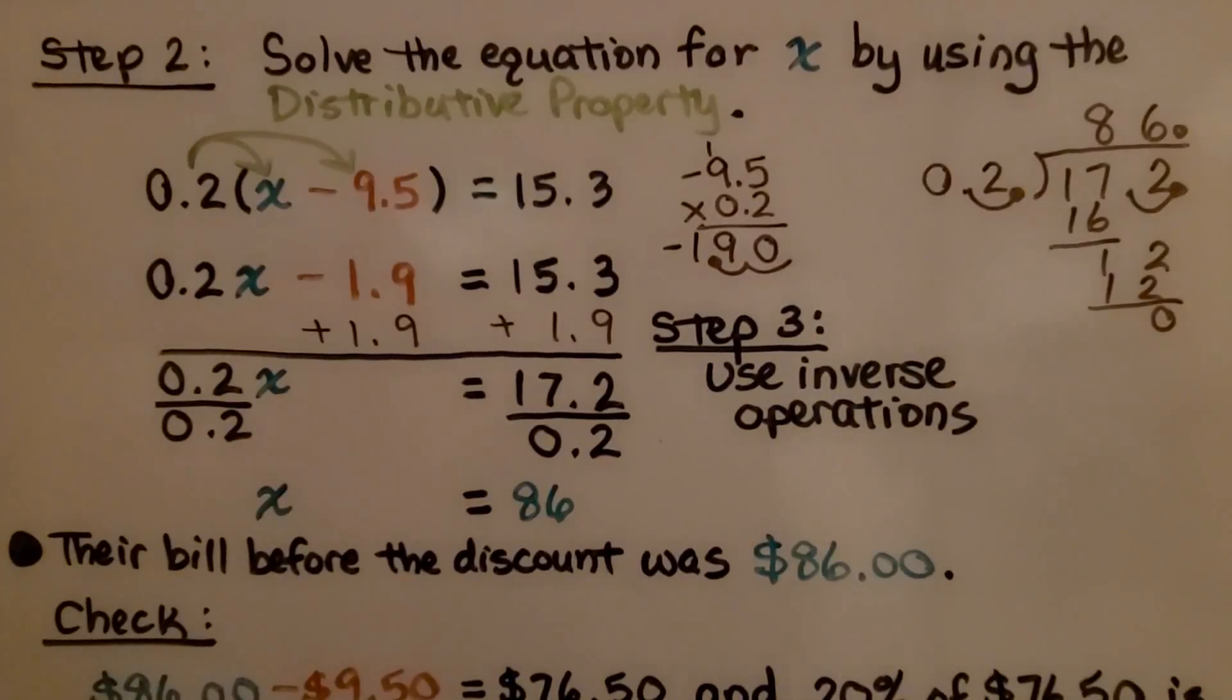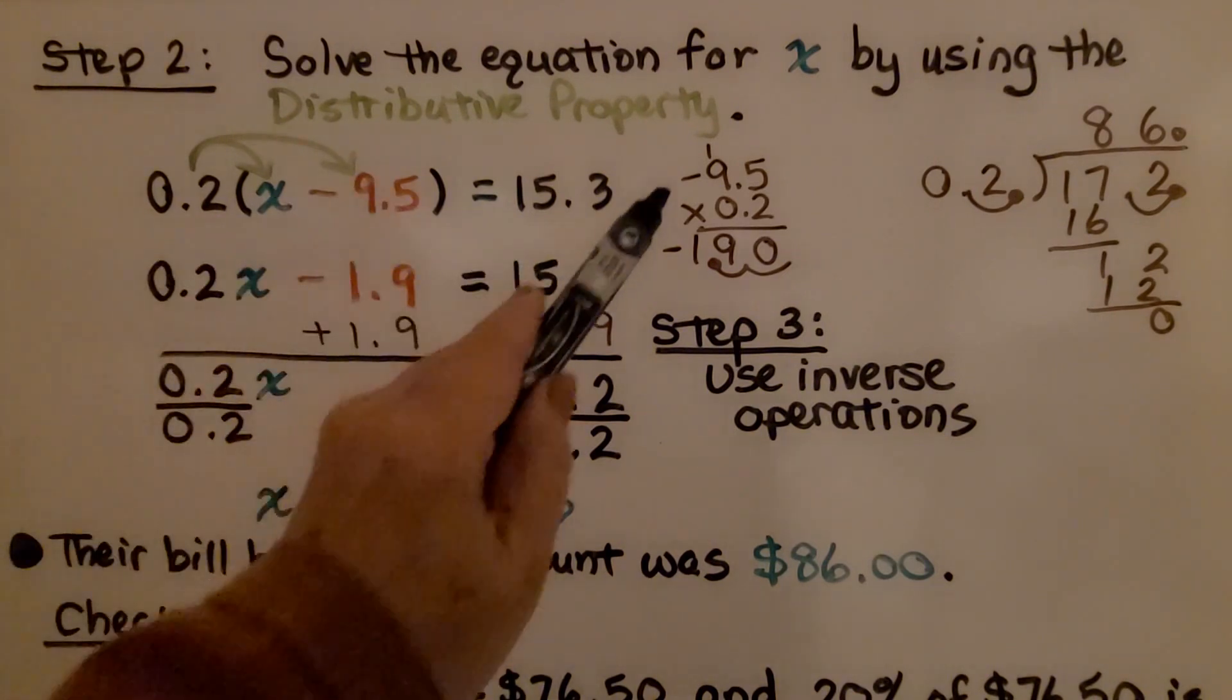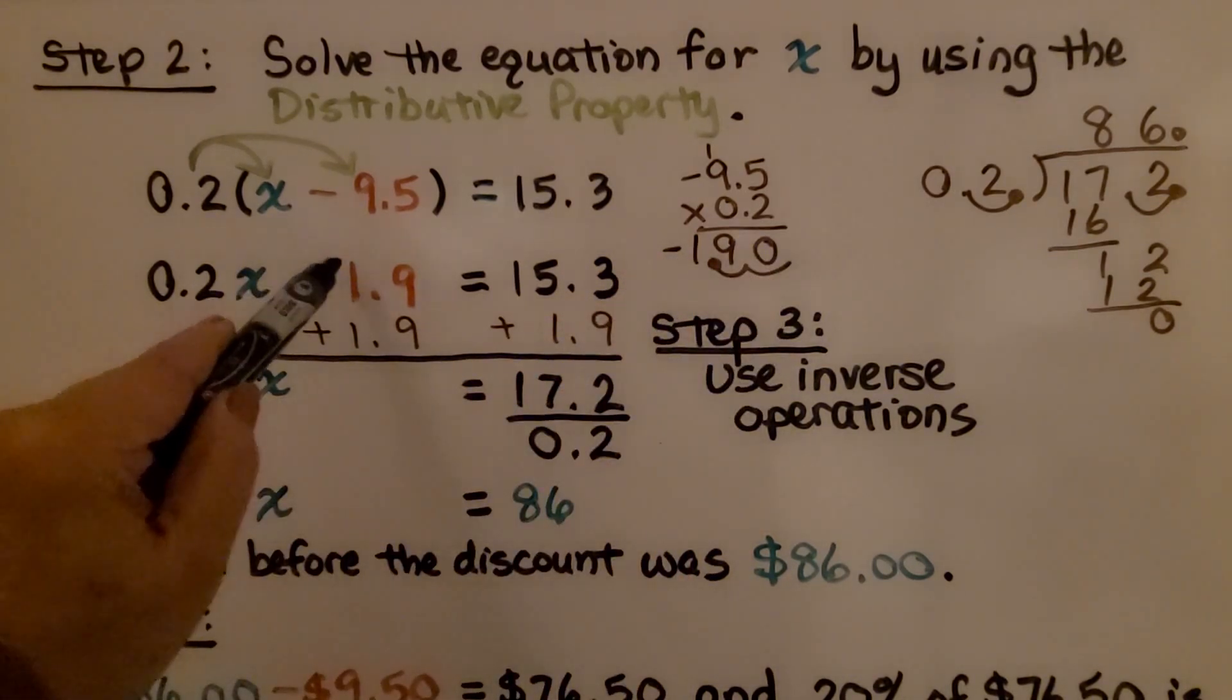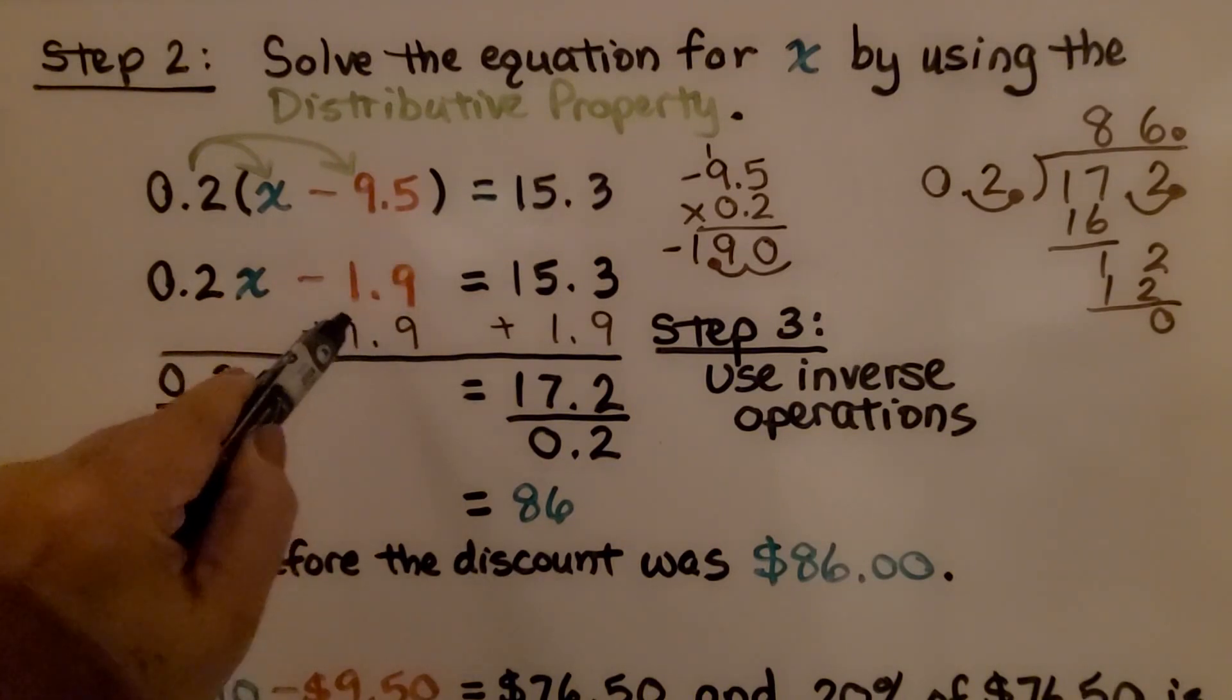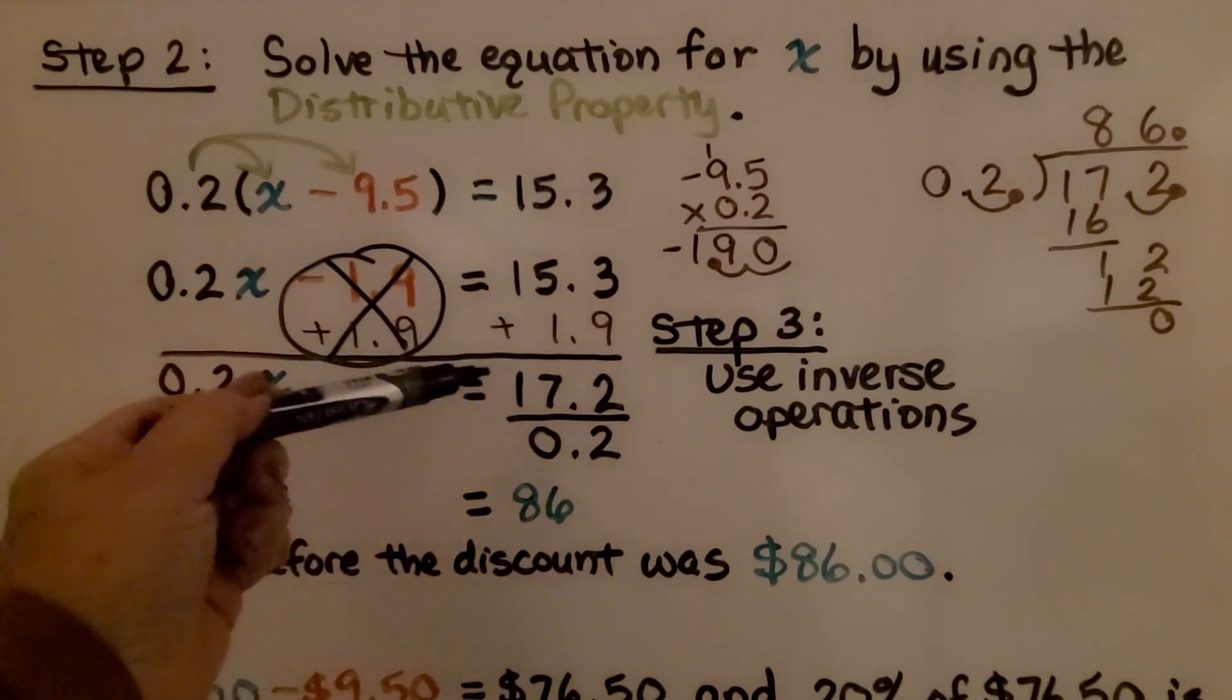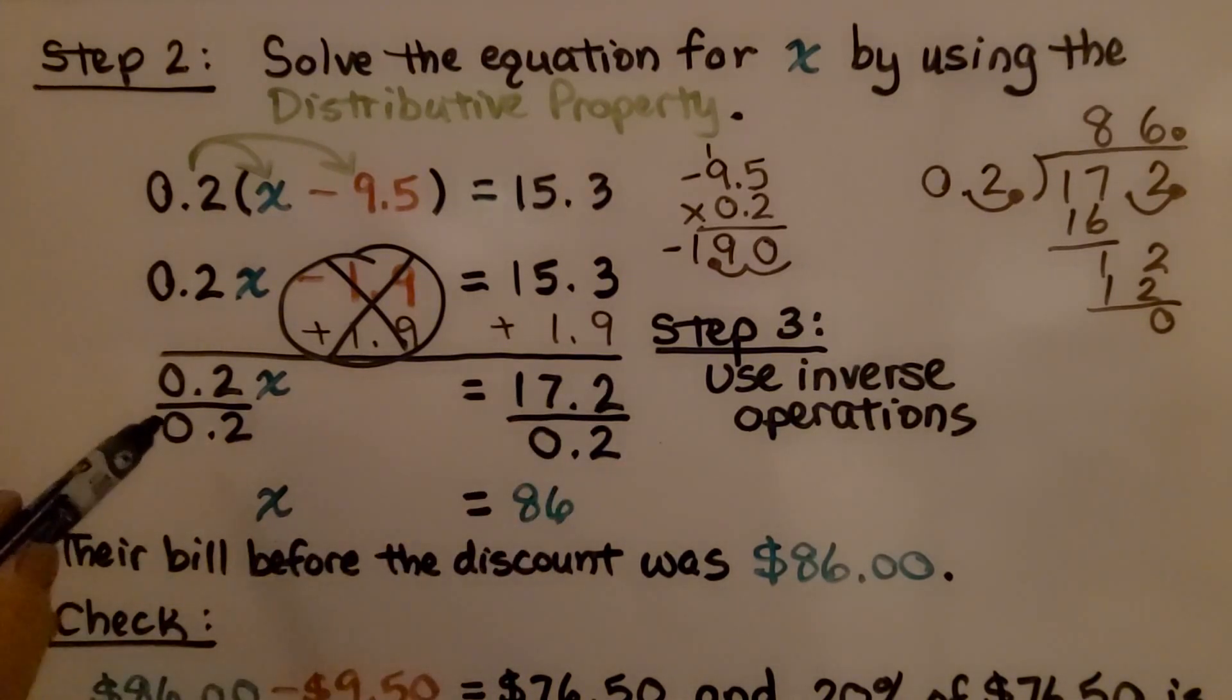Now step two is we solve the equation for x by using the distributive property. We distribute this 0.2 to the x and get 0.2x, and we also distribute it to the negative 9.5. Negative 9.5 times 0.2 is negative 1.9, and it's equal to 15.3. Because this is minus 1.9, we add 1.9 to both sides. That creates a zero pair and eliminates it. We've got 0.2x is equal to 17.2. We divide both sides by the coefficient 0.2 and get that x is equal to 86.